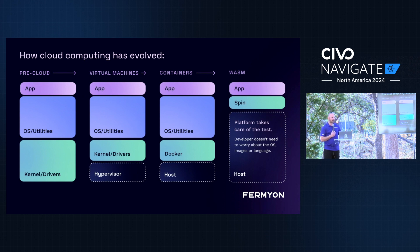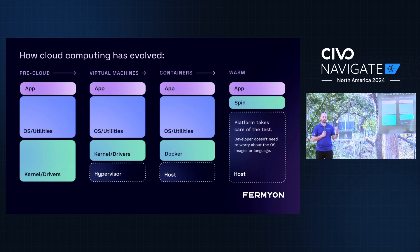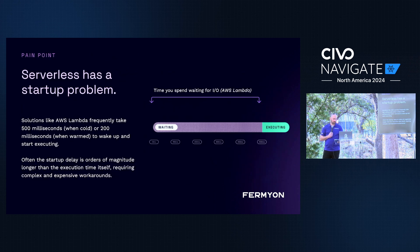By doing this we still add all these concerns that are not what you want your developers doing. At the end of the day, you want them spending their time writing the application that makes your company money. With WebAssembly, the only artifact you really care about is bytecode that is just a transformation of the code your developers wrote — you don't have to worry about the OS, whether it's Intel or x86, or any of the things that have historically slowed developers down.